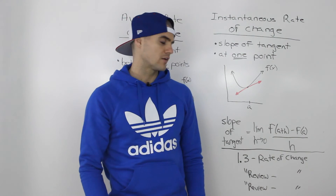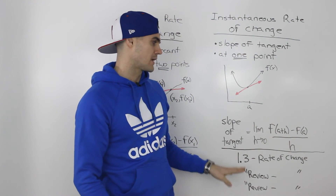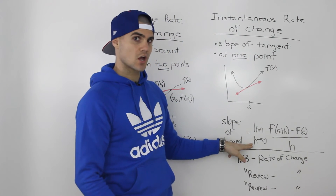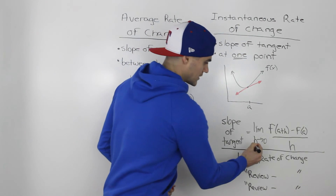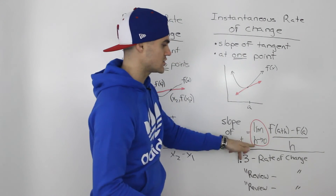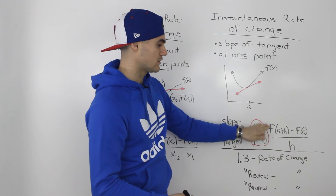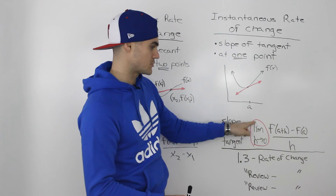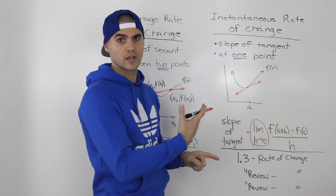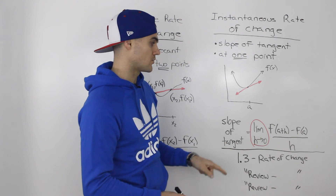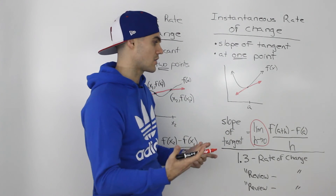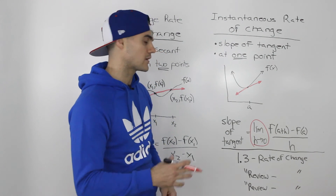One final thing about those review videos: all the examples use instantaneous rate of change and the difference quotient. However, in those videos I don't write the limit notation — that's a calculus concept. I do the same algebra and plug in zero for h at the end, I just don't write 'limit as h goes to zero' beside the algebra. So whenever you're writing those examples out, make sure you're writing that limit notation beside all of them.